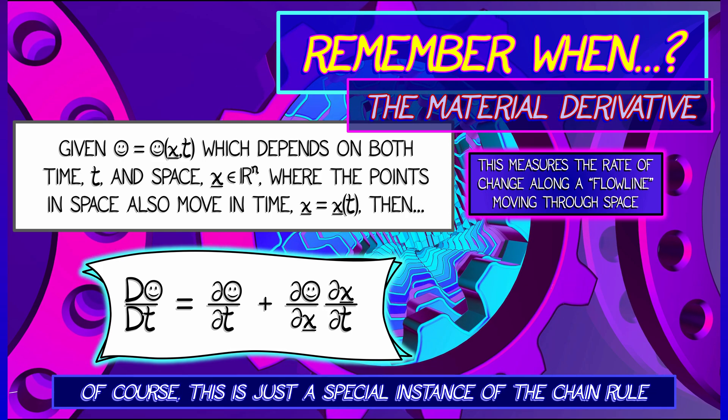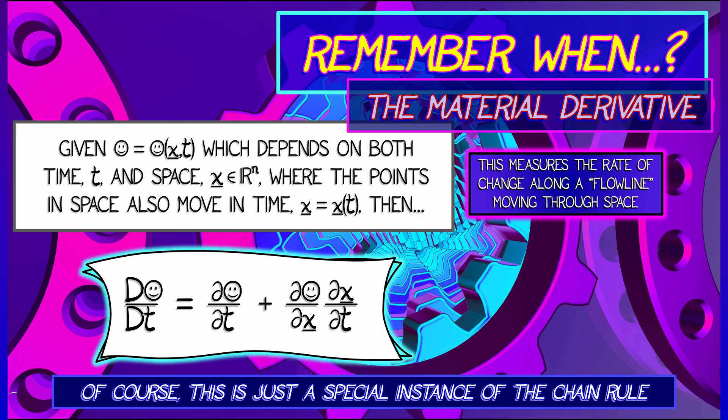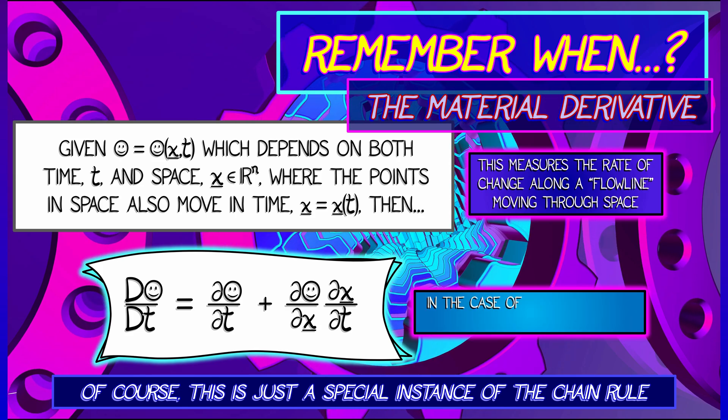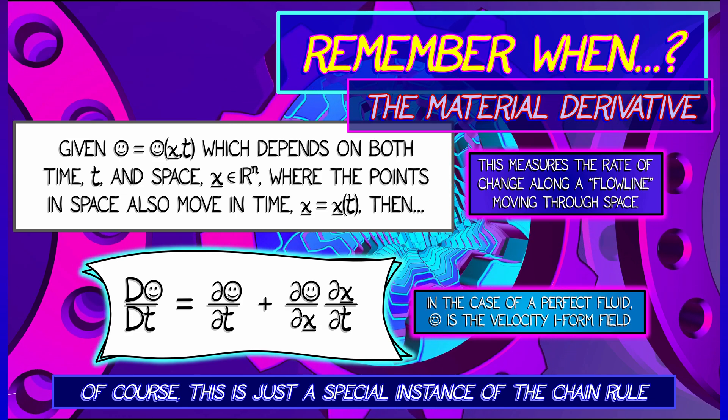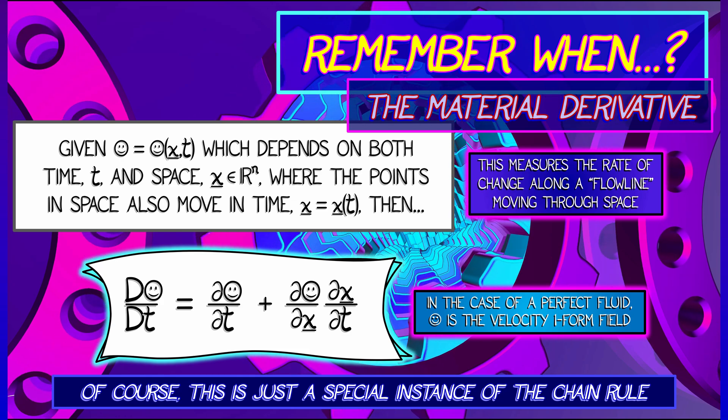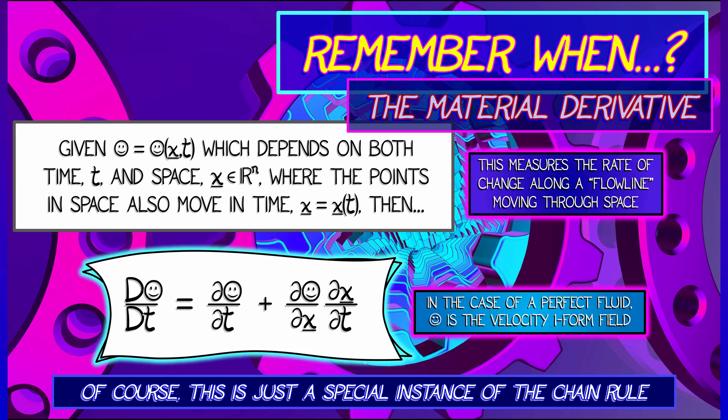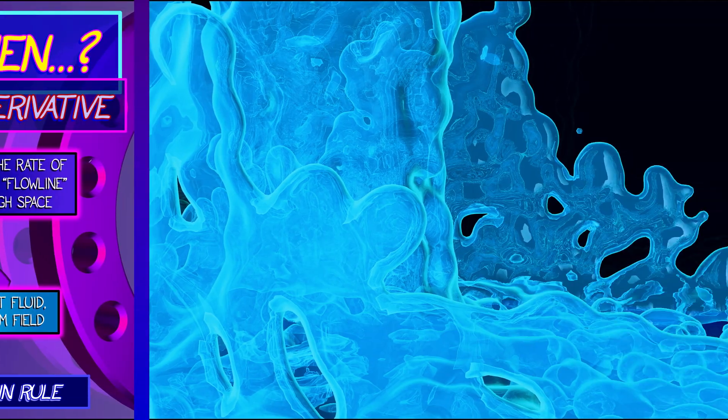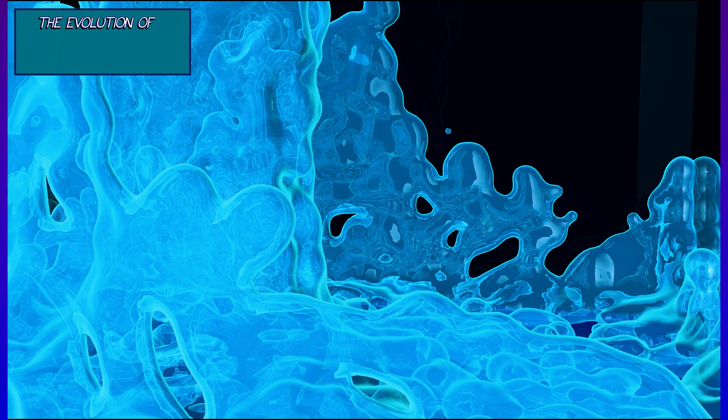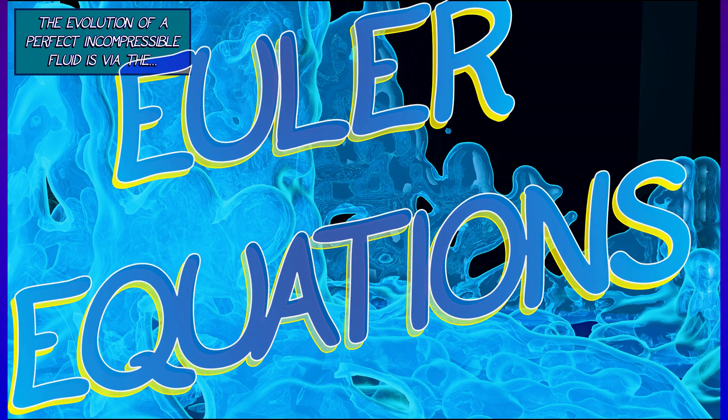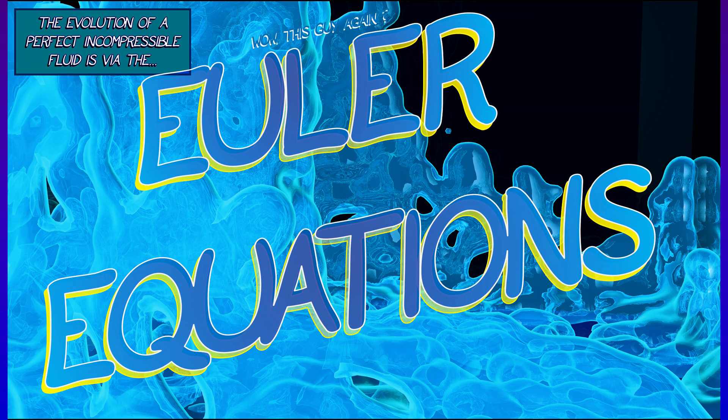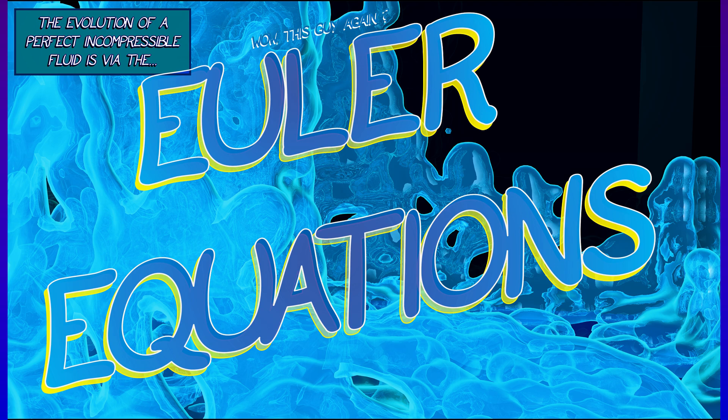If you go back to volume two, look at what we did there, you'll see it was an easy consequence of the chain rule. Now, in the case of a perfect fluid, this Smiley is going to be the velocity one form field. That's the thing that we're going to be evolving over time. And that evolution is going to be encapsulated in something called the Euler equations. Yep, it's that guy again. What are the Euler equations for a perfect fluid?